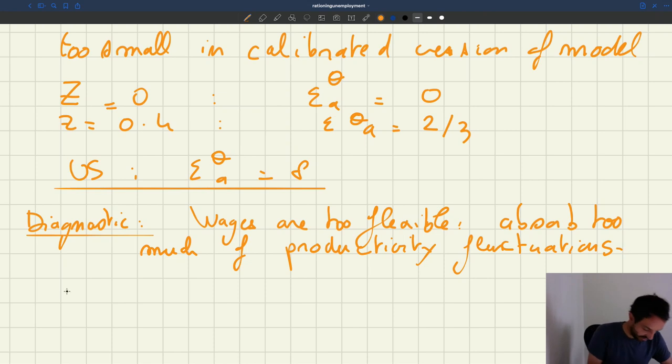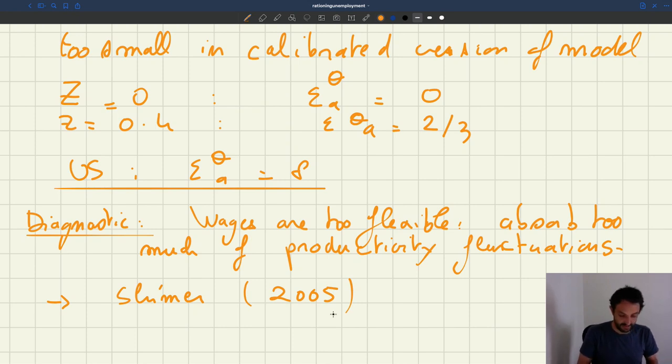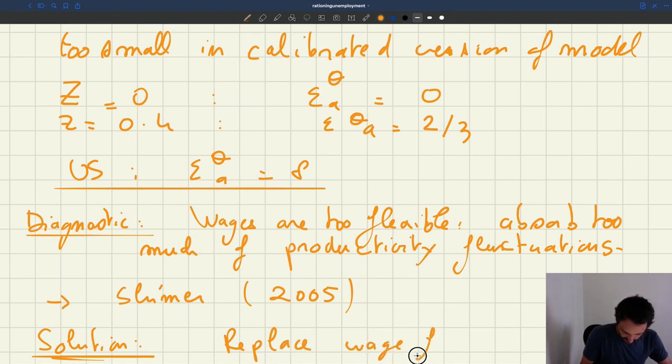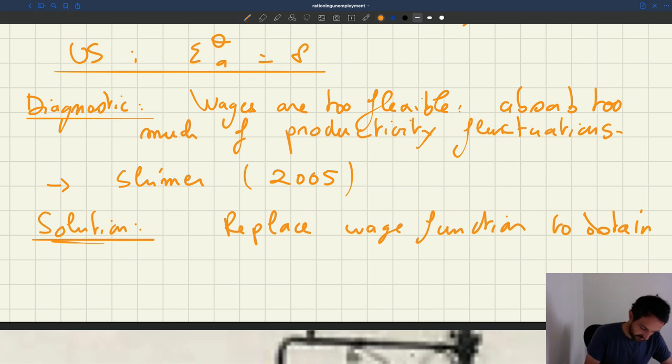And you can see a discussion of all of these problems in the two articles that are assigned, in Shimer 2005 in particular. And so what's the solution to that problem? Well, the solution was pretty simple. It was because wages are too flexible in the basic model. That's because of the bargaining or the surplus sharing solution. So the solution was to replace the wage function to obtain more rigid wages. Once you do that, you're going to get a model that generates much bigger business cycle fluctuations.